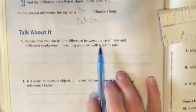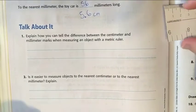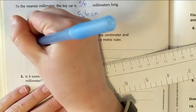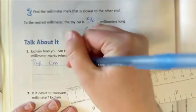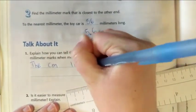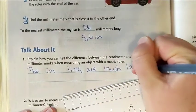Explain how you can tell the difference between the centimeter and millimeter marks when measuring an object with a metric ruler. The centimeter (cm) lines are much larger and marked with numbers. The millimeter lines are the ones that are blank.